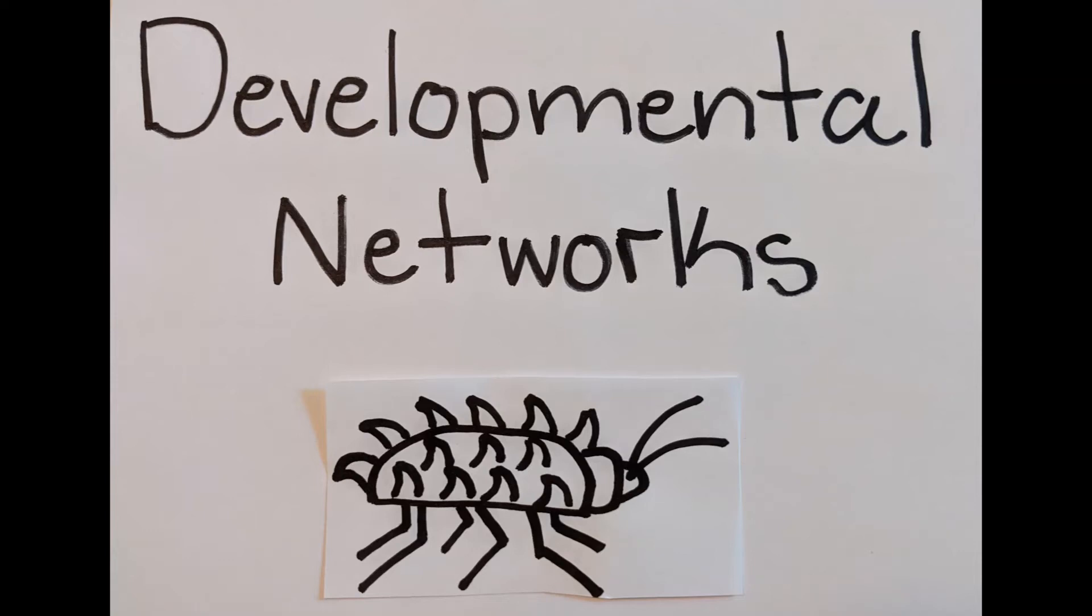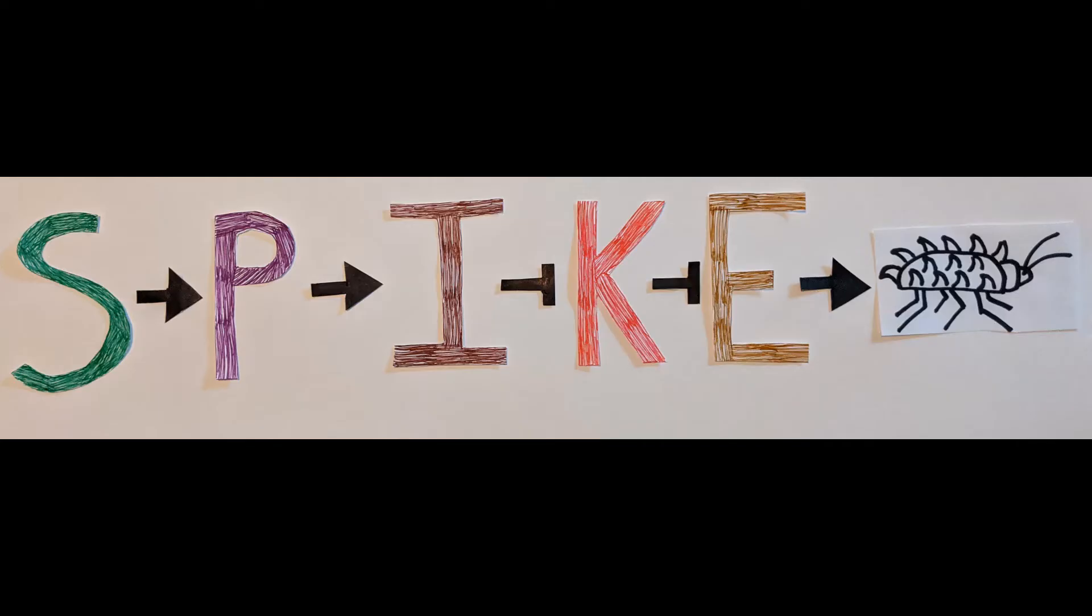Today I will be discussing developmental networks. The example that I will use to illustrate this network is the spiny beetle. As you can see, there are five genes in the pathway that control the spikes in the beetle.